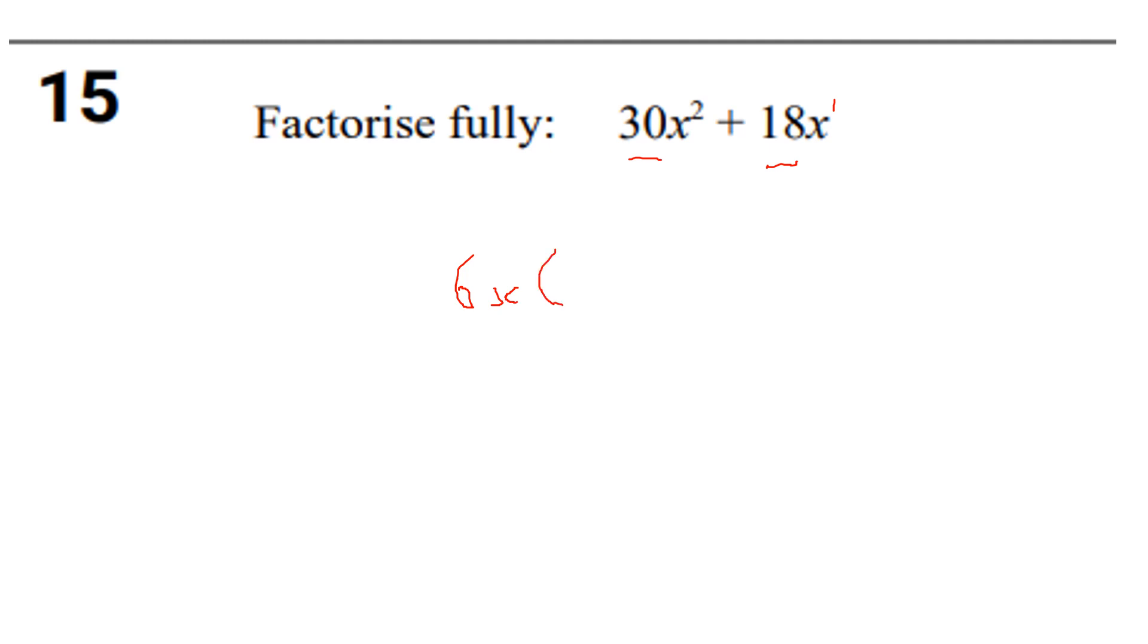Inside the bracket, 6x times what makes 30x²? That would be 5x. And 6x times what makes 18x? That would be plus 3. So my final answer is 6x(5x + 3).